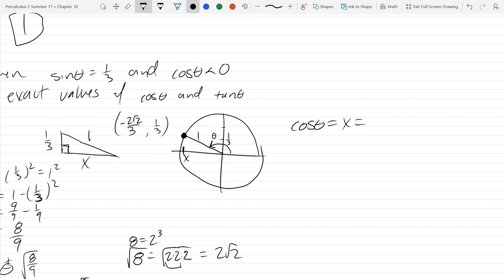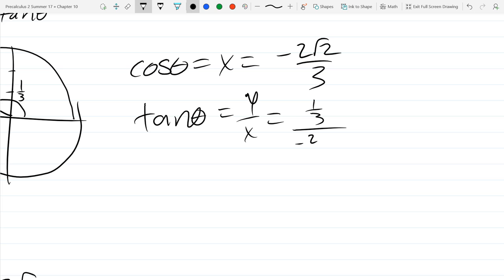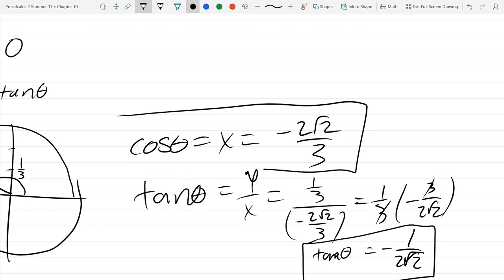So cos theta is x, which is negative two square root two over three. And tangent theta, y over x, which is one-third over, we've got to be careful, we're about to have a multi-story fraction. So we're going to multiply by the reciprocal of the denominator. So it's negative three over two square root two. The threes are going to cancel. You've got to be careful. They will cancel out, but we still have a negative. So it's negative one over two square root two. And this is our tangent of theta. And there's our cosine right there.